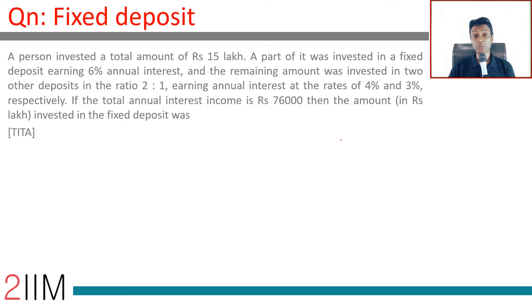A person invested a total amount of Rs 15 lakhs. A part of it was invested in a fixed deposit earning 6%. The remaining amount was invested in two other deposits in the ratio 2:1, earning annual interest at the rate of 4% and 3%. If the total annual interest income is Rs 76,000, then the amount invested in fixed deposit was: